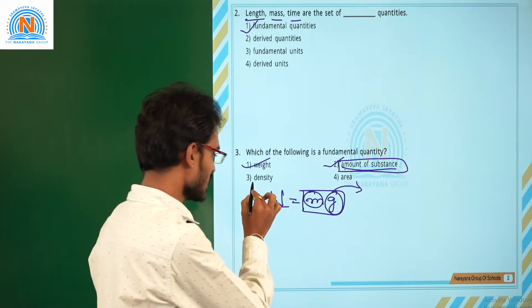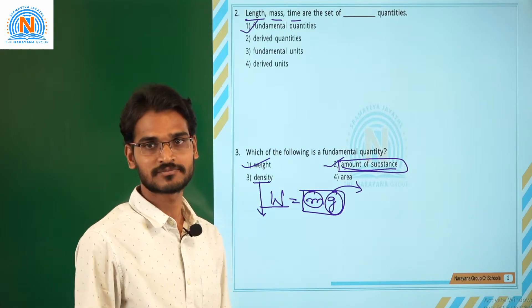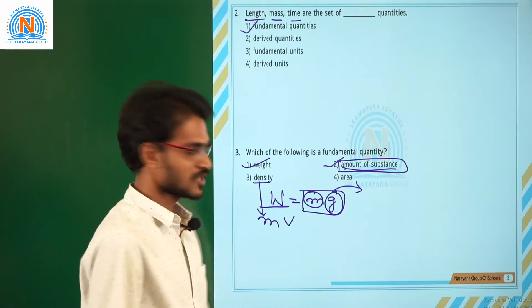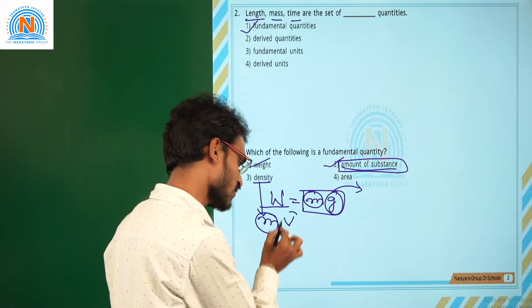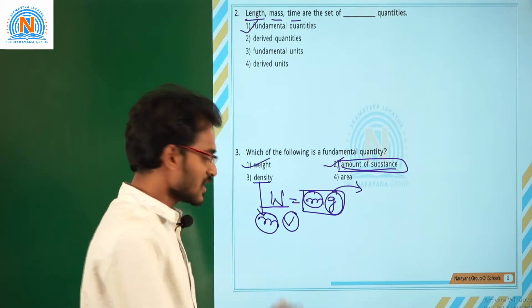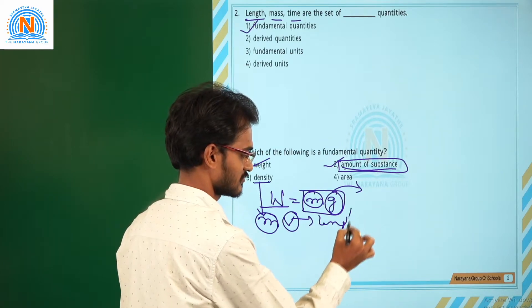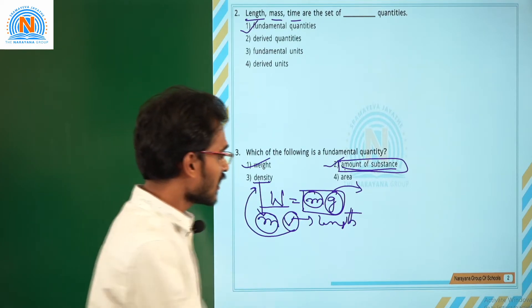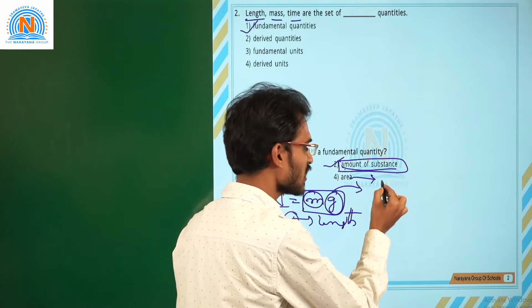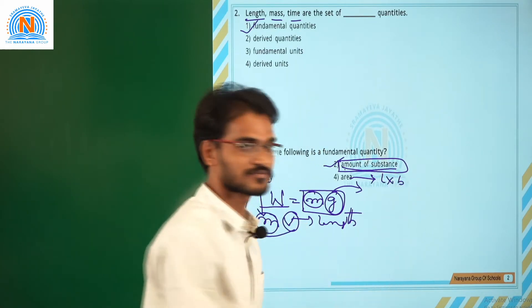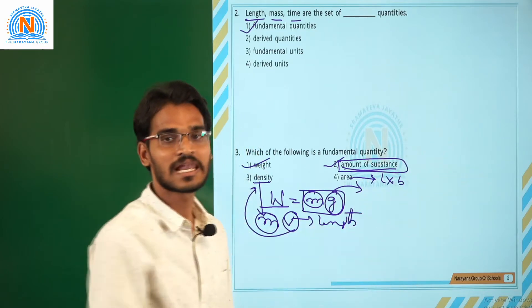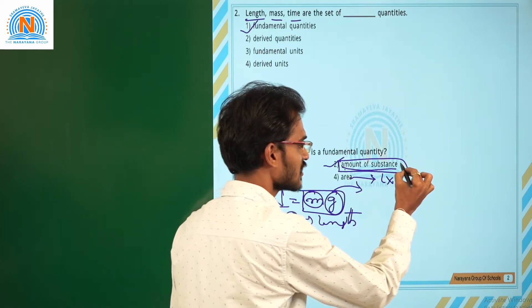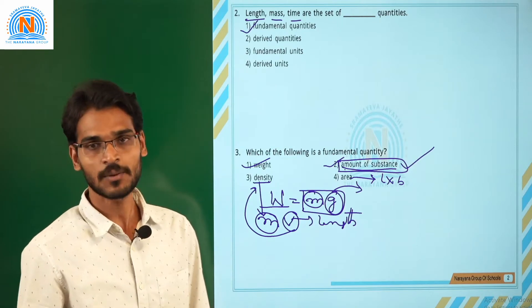Also check density — it is derived from two quantities: mass and volume. Mass is a fundamental quantity, but volume is not; it is derived from length. So density is also a derived quantity. Area has the formula length times breadth, so it too is derived from length and cannot be called a fundamental quantity. Therefore, amount of substance is the fundamental physical quantity.